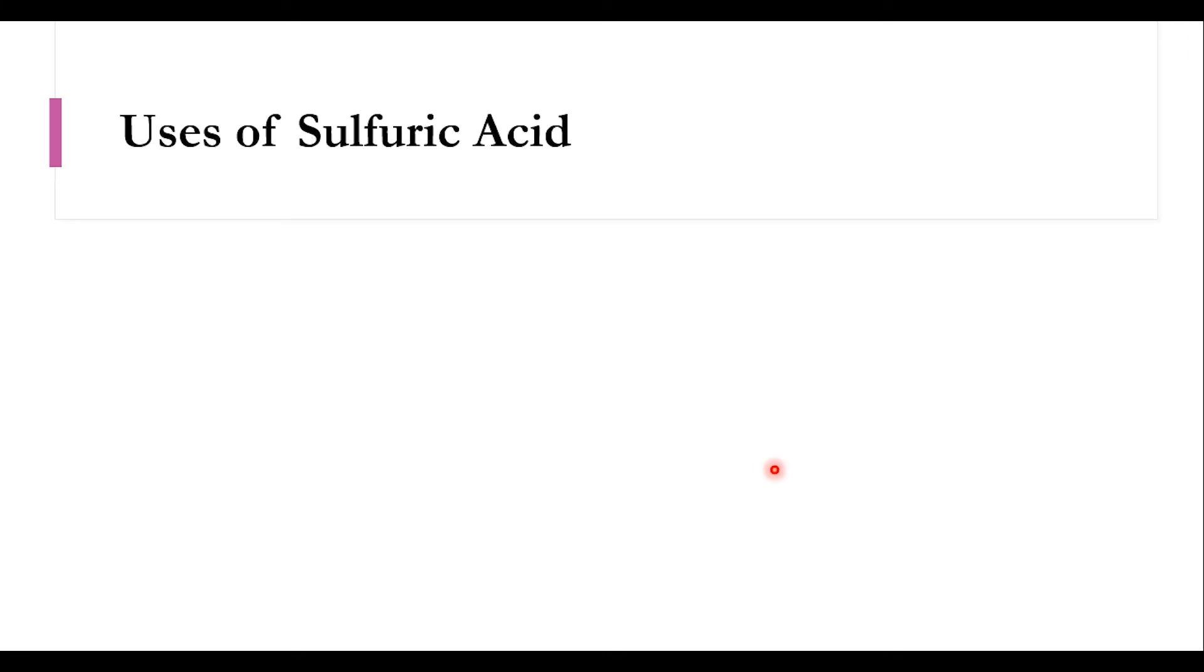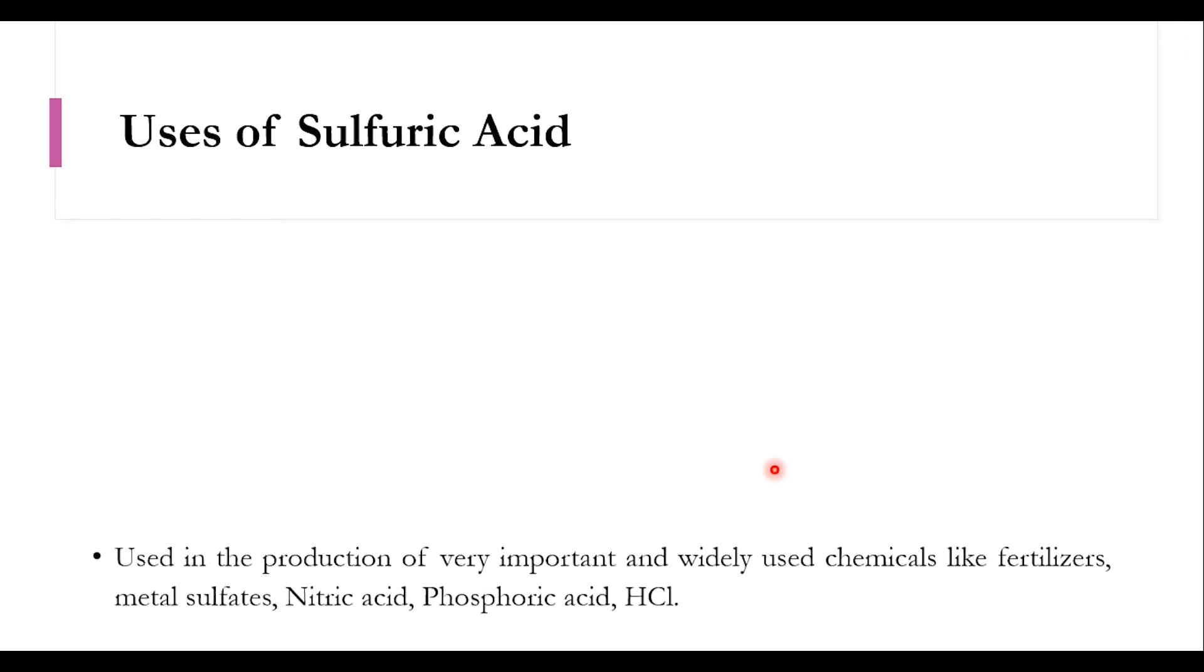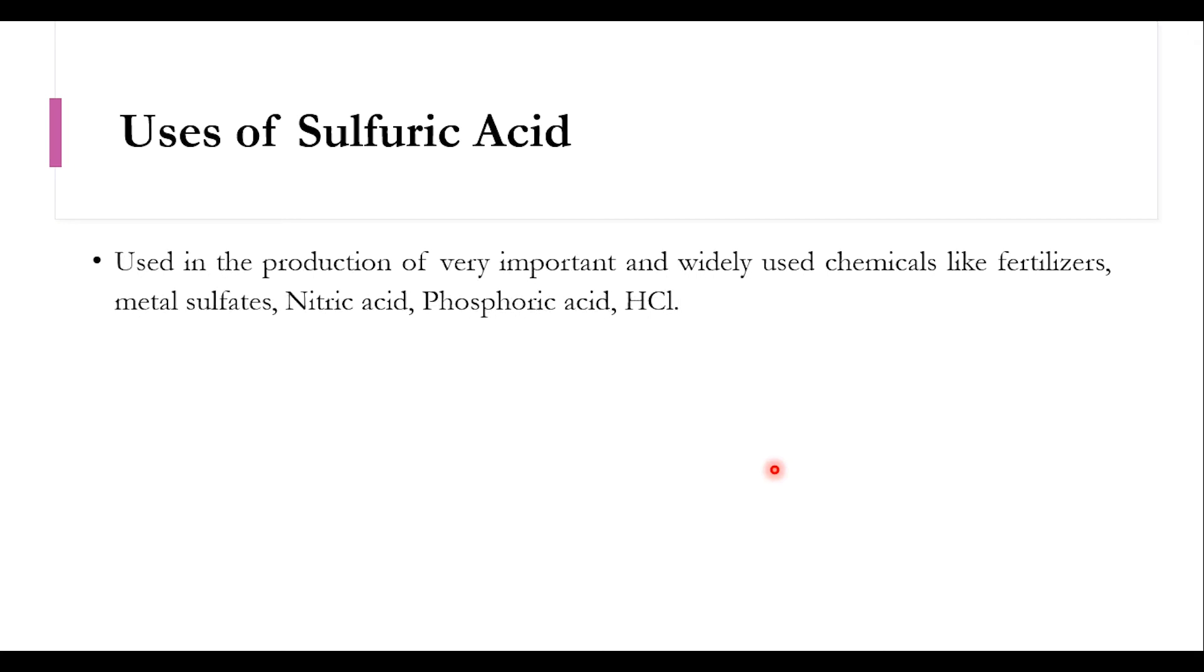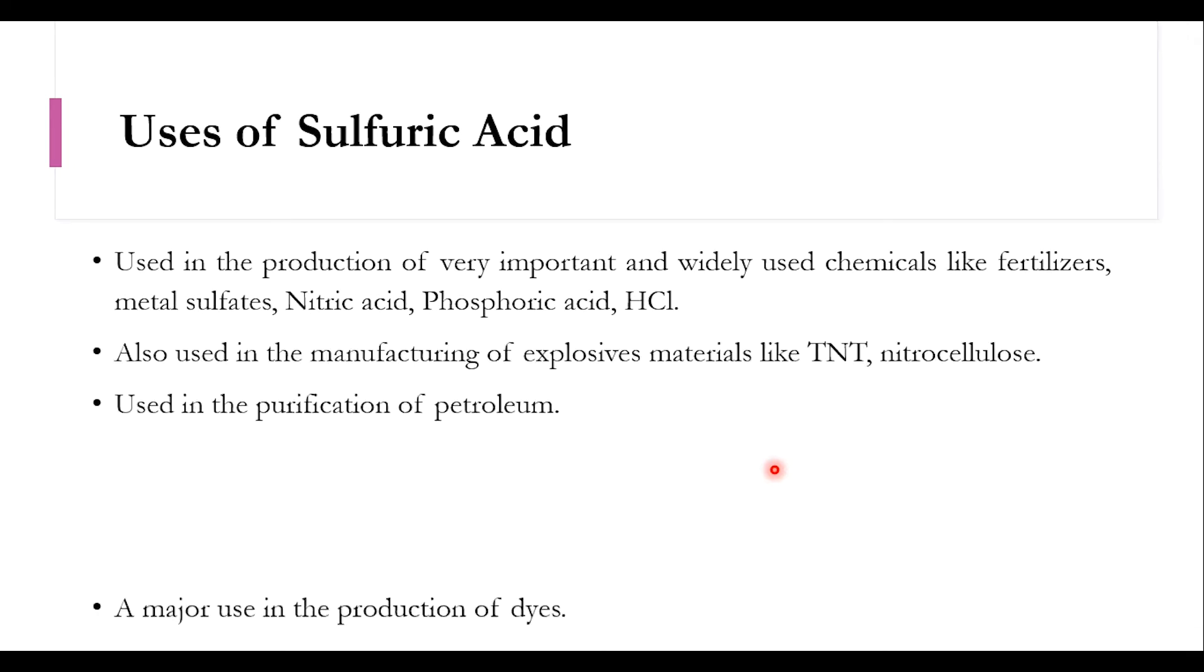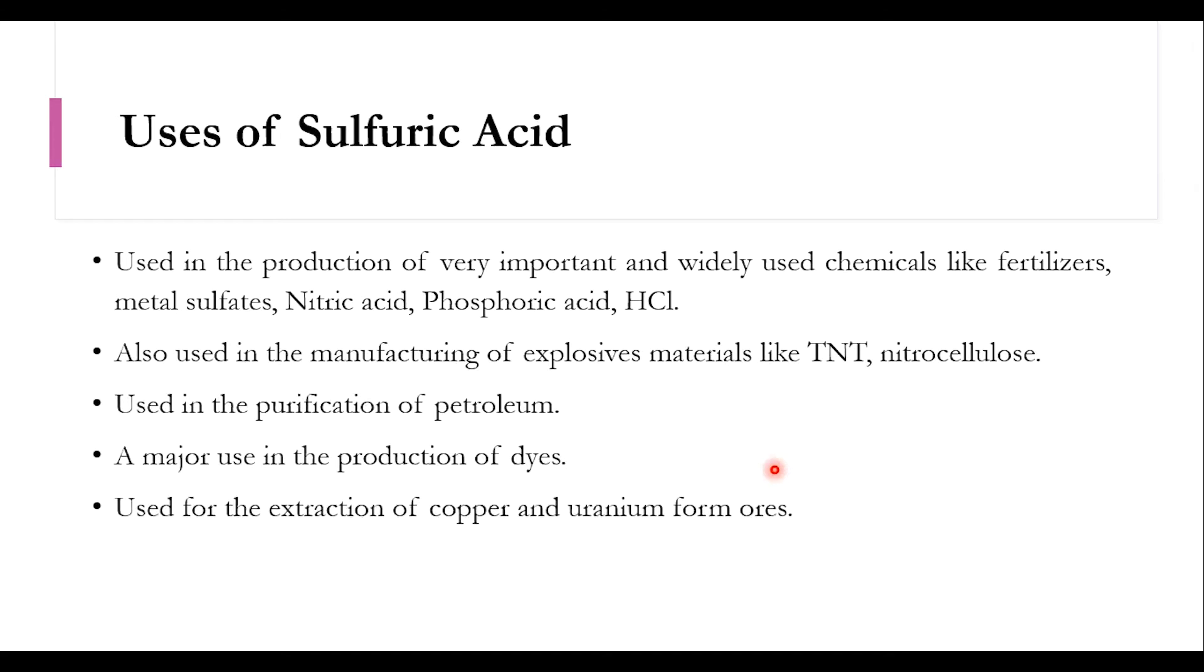For a refresher, let's look at the uses of sulfuric acid. It is used in preparation of chemicals like fertilizers, metal sulfates, nitric acid, phosphoric acid, nitrocellulose explosives, purification of petroleum, production of dyes, extraction of copper and uranium from ores, and serves as an electrolyte in lead acid batteries.